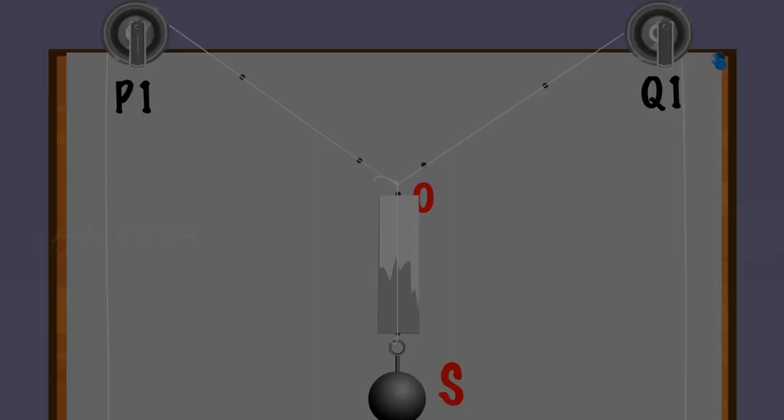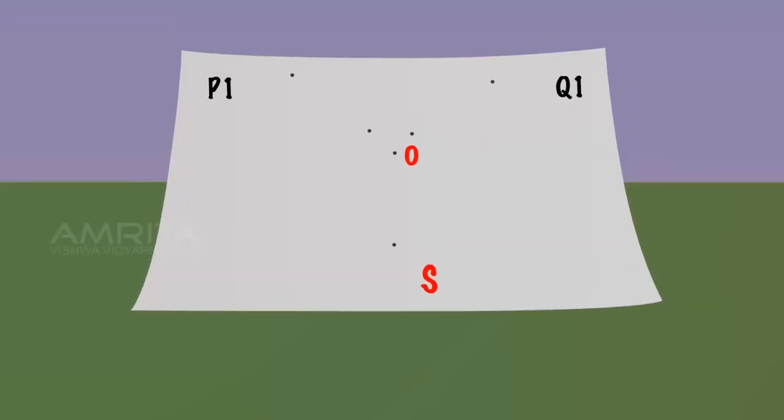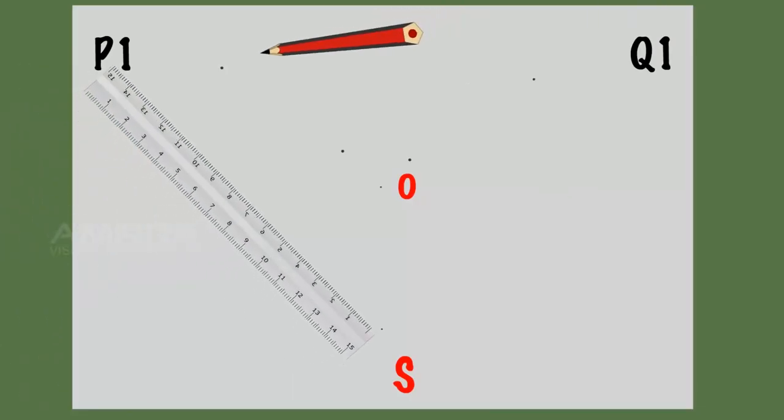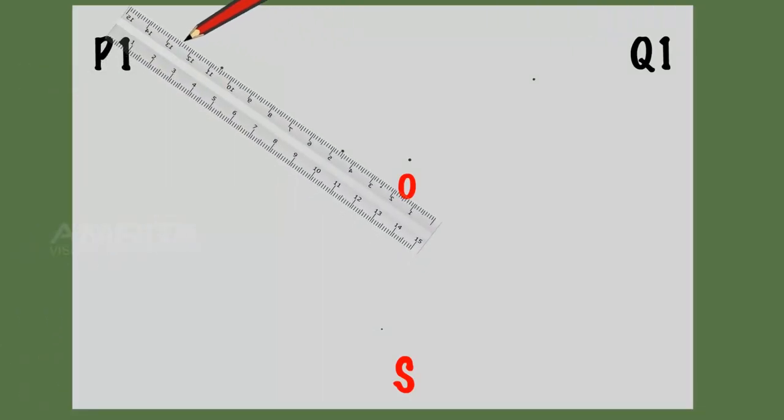Remove the paper from the board by releasing the pins. Place it on the table. Join the marked points with a pencil and a scale.